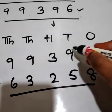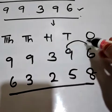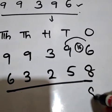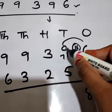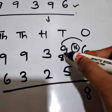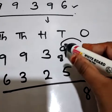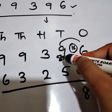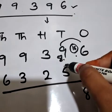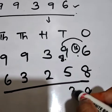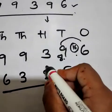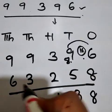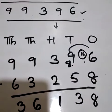6 minus 8, we cannot do. So we have to take borrow from 9. So it will become 16. 16 minus 8 is 8. This will become 8 because it is already 9, but he has given 1 number to side number, so 1 is reduced from 9. 8 minus 5 is 3. 3 minus 2 is 1. 9 minus 3 is 6. 9 minus 6 is 3.